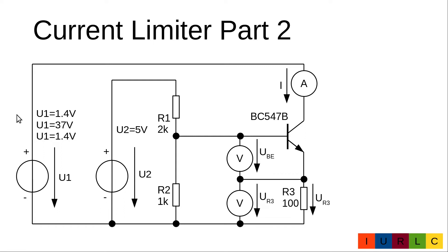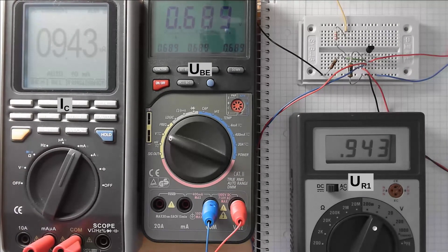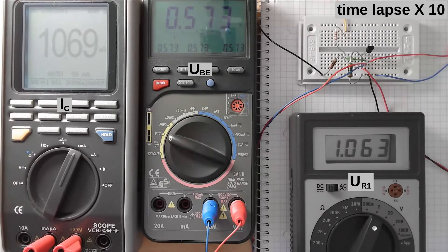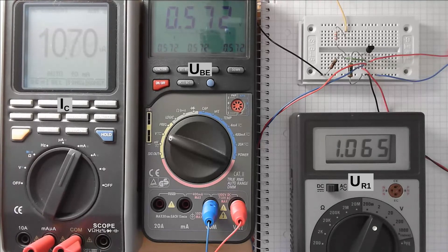In the second measurement, the collector voltage is quickly increased from 1.4 V to 37 V and held until the current stabilizes. After stabilization, the collector current is 10.7 mA, the base-emitter voltage is 571 mV, and the voltage across the current-sense resistor is 1.066 V.